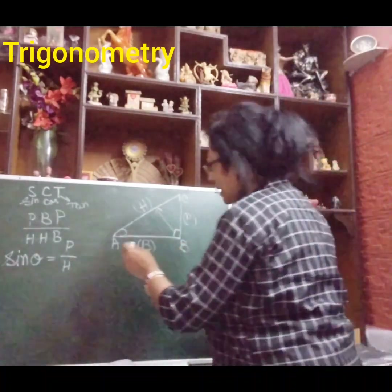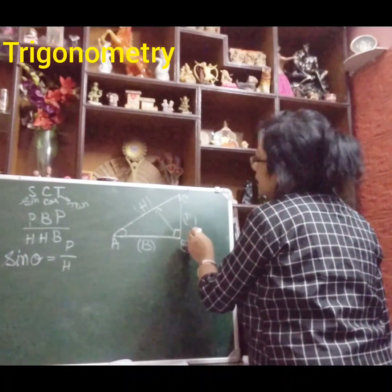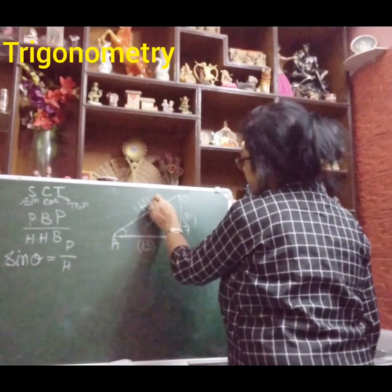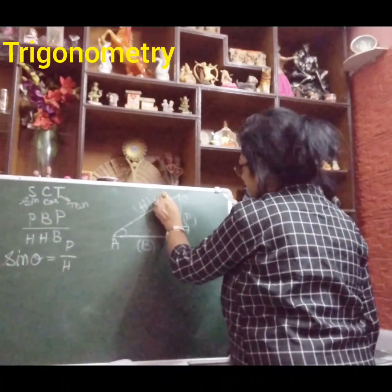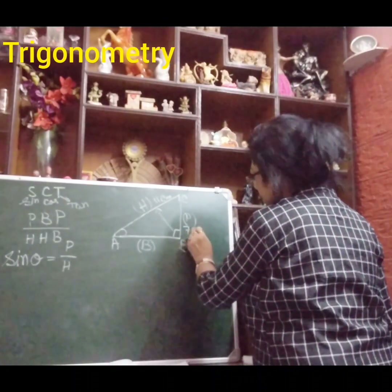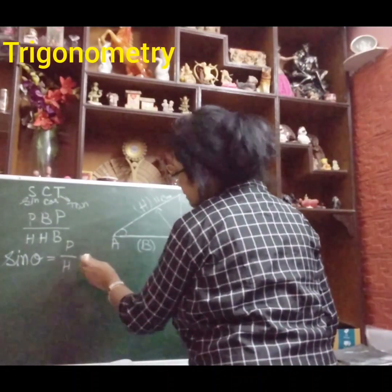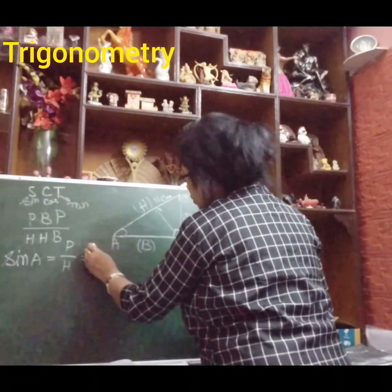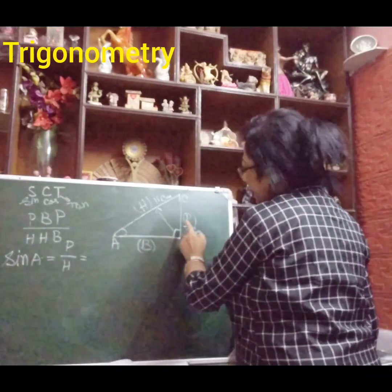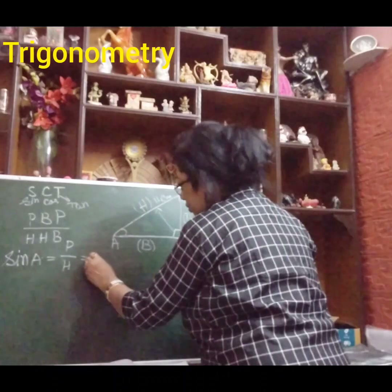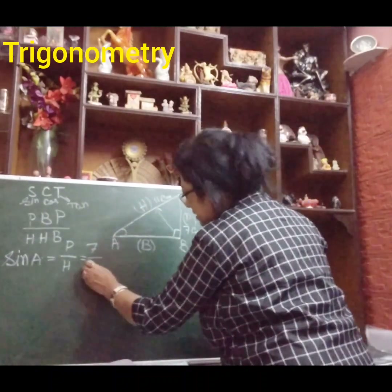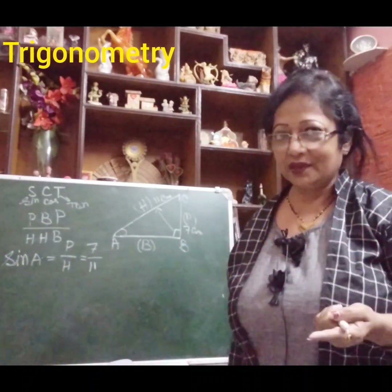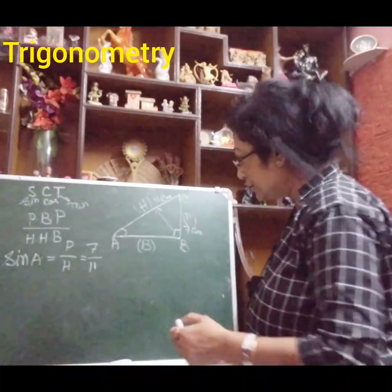Let me give you one example. Suppose perpendicular is 7 centimeters and hypotenuse is 11 centimeters. So if you want to find sin A, you write perpendicular divided by hypotenuse — that is 7 by 11. Very easy! Slowly the harder questions will come also, but that we will also solve — no problem.